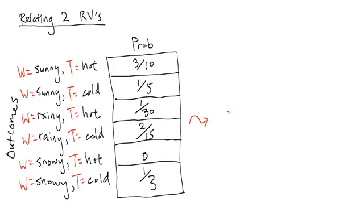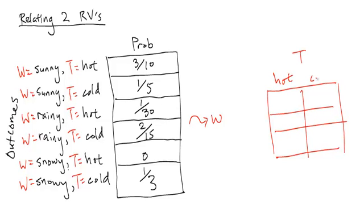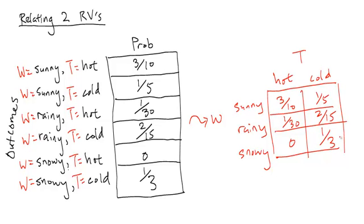And if you look at this, what we can do is rearrange the table as follows. We can write the weather on one side and the temperature on another to make a three row by two column table. So we have hot, cold, sunny, rainy, snowy. We can just copy over entries from this probability space. So sunny and hot has probability three tenths, and then we have one fifth, one thirtieth, two fifteenths, zero, and one third. And this table here has all the information in this table, it's just written in a different way.